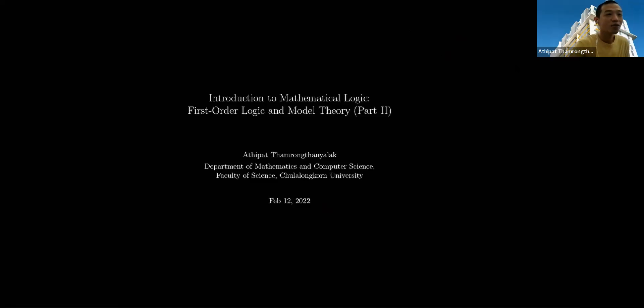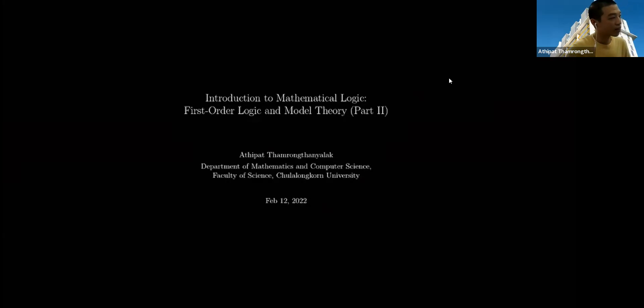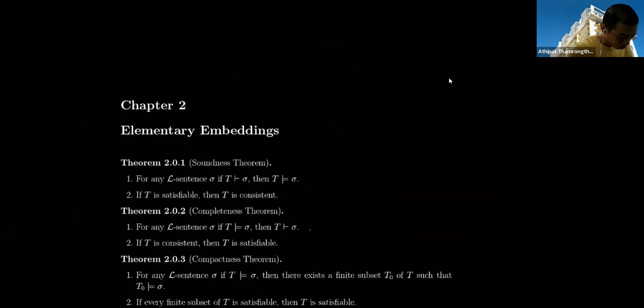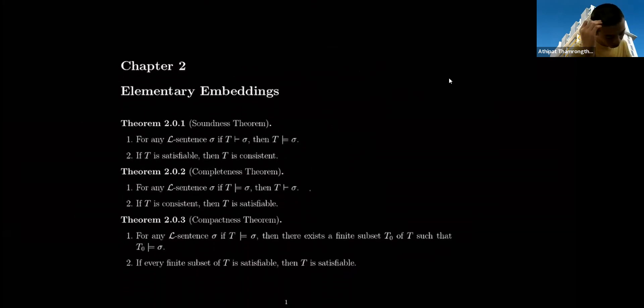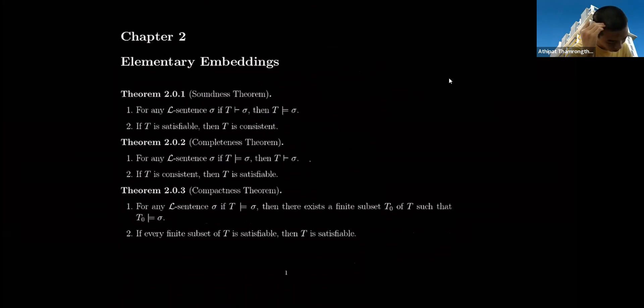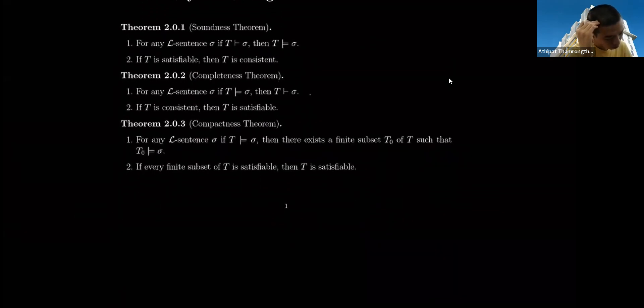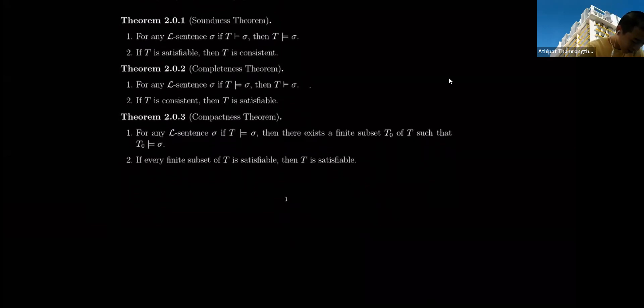Hi everyone. Let's continue on the second part of first-order logic and model theory. Last time we already talked about the soundness, completeness, and compactness theorem, but I just briefly talked about it and won't go into much detail. So let's start by showing some sketch proof of the completeness theorem, because I think this is a very interesting proof.